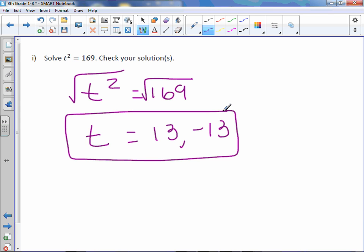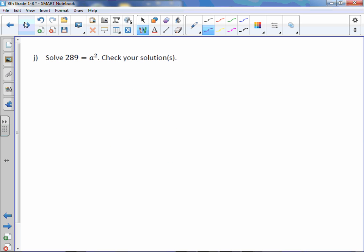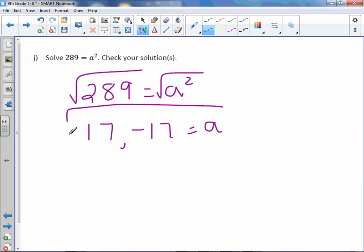Again, when you're solving an equation, you need to write both roots. Letter J. 289 equals a squared. To get rid of a square, we square root. The square root of 289 is 17 and negative 17. And that equals a.